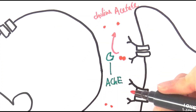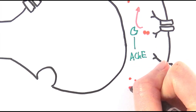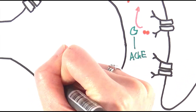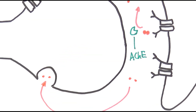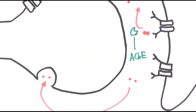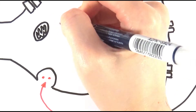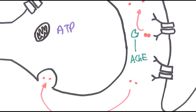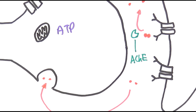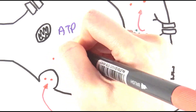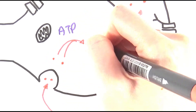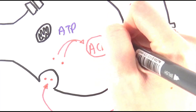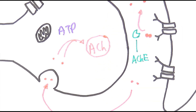The choline and acetate diffuse back to the pre-synaptic neuron down the concentration gradient. Inside the pre-synaptic neuron, mitochondria carry out aerobic respiration to release ATP. That ATP is used to combine acetate and choline back together into acetylcholine, which is repackaged into vesicles. So nothing is ever lost — everything is recycled in this process.